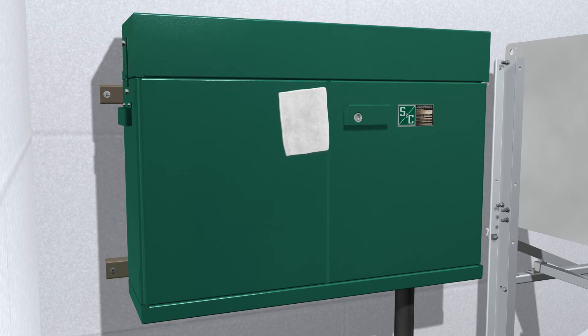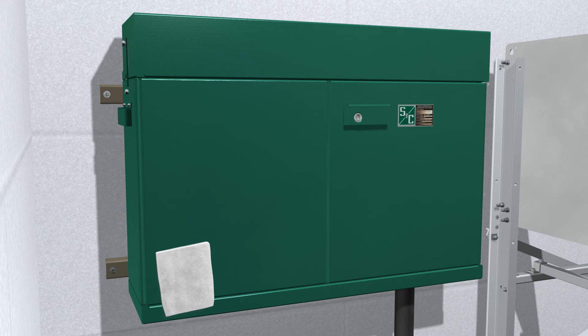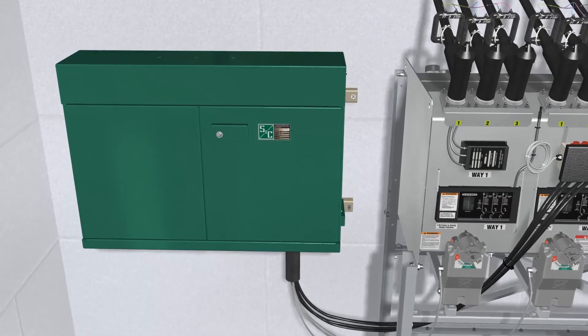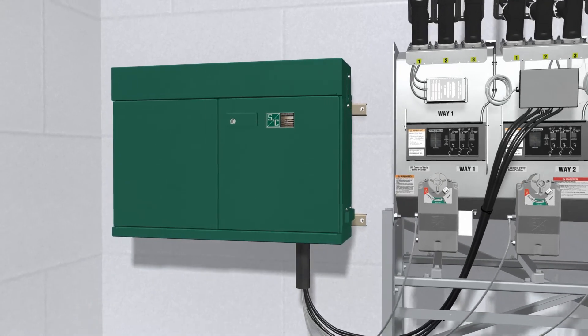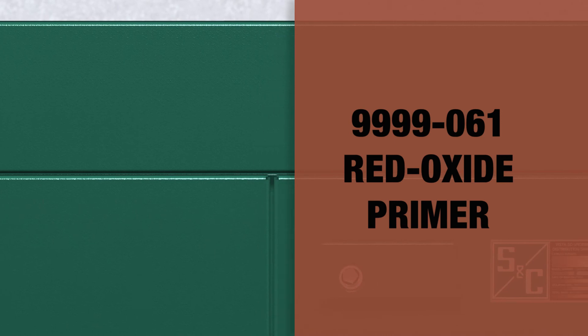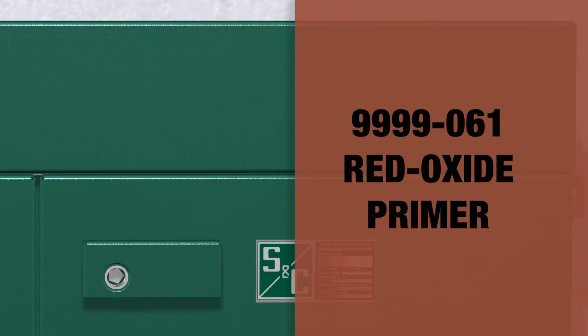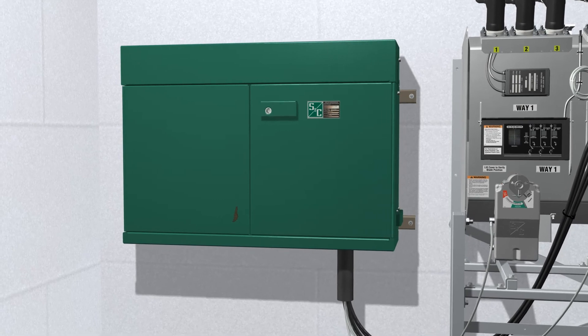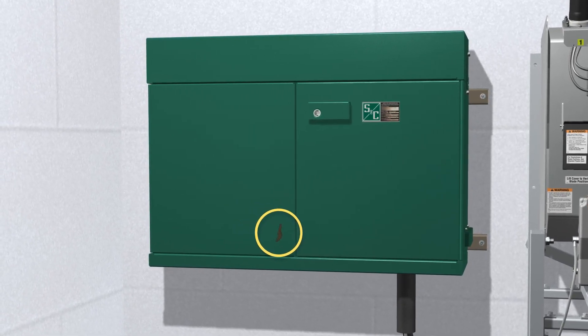With the installation complete, wipe down the exterior of the enclosure with a clean, damp cloth. Re-finish any scratches or abrasions with S&C Touch-Up Finish Red Oxide Primer. Order catalog number 9999-058 for olive green finish, 9999-080 for light gray finish, and 9999-061 for red oxide primer. No other finish or primer is approved. The area to be touched up should be cleaned to remove all oil and grease. Sand the area to remove any traces of rust that may be present, and make sure all edges are feathered before applying primer.